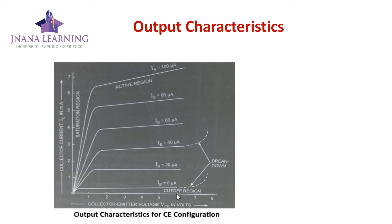Comparing with the common base configuration: the output characteristics has some slope in common emitter configuration, whereas common base has an almost horizontal curve. This shows that the output resistance is less for common emitter configuration than for common base configuration.